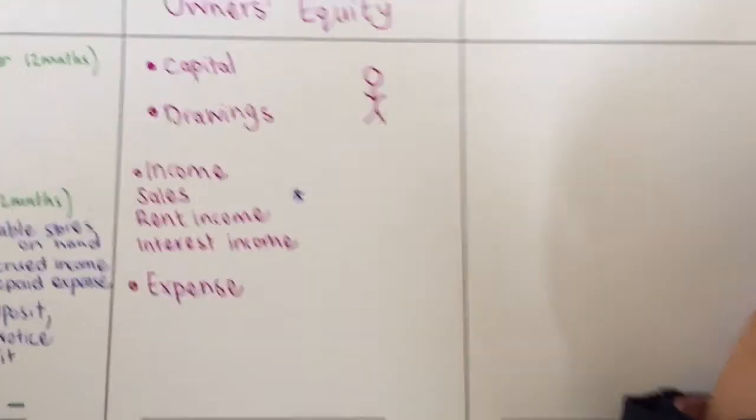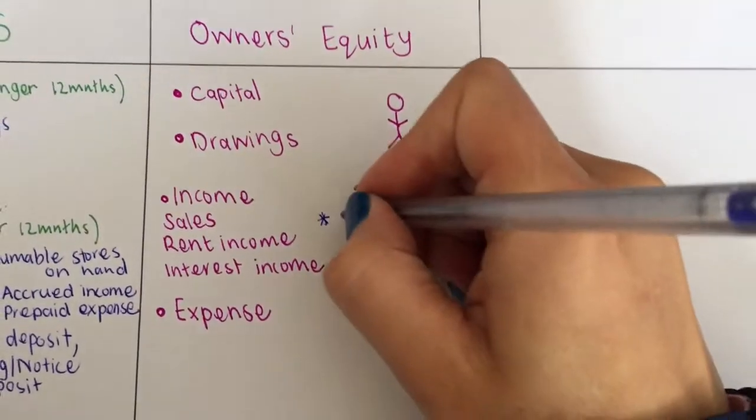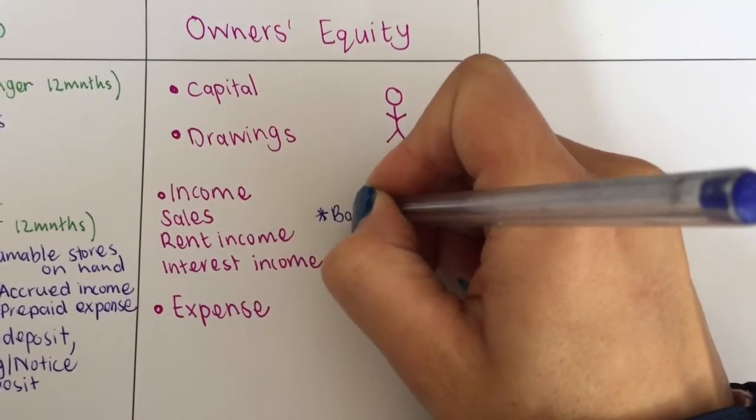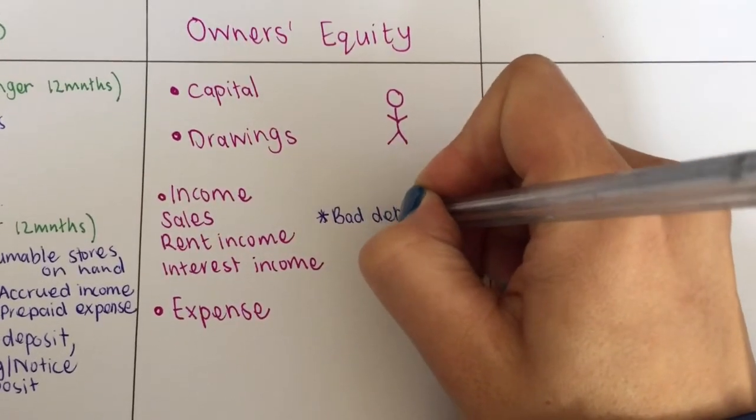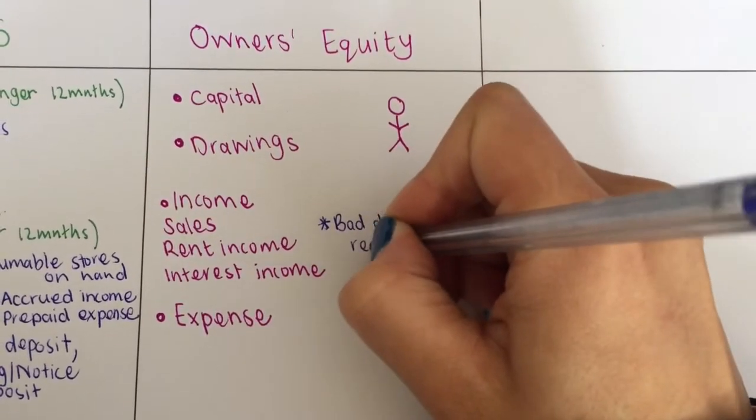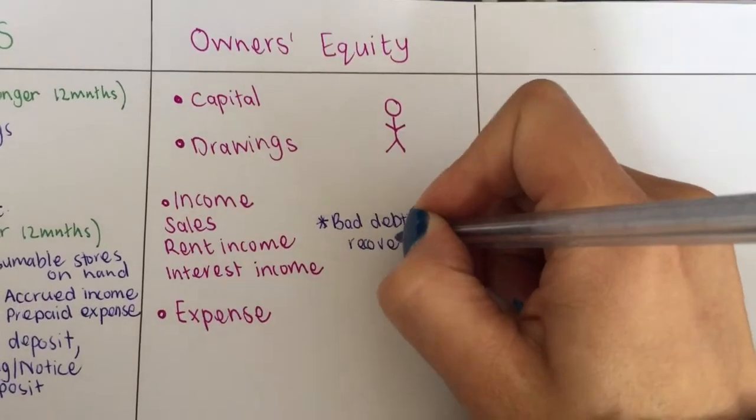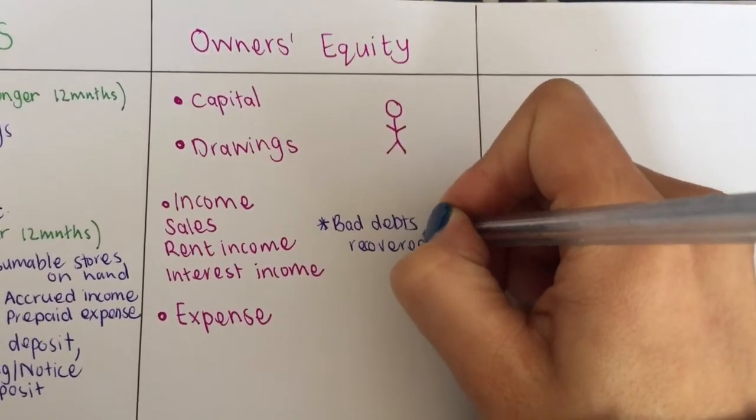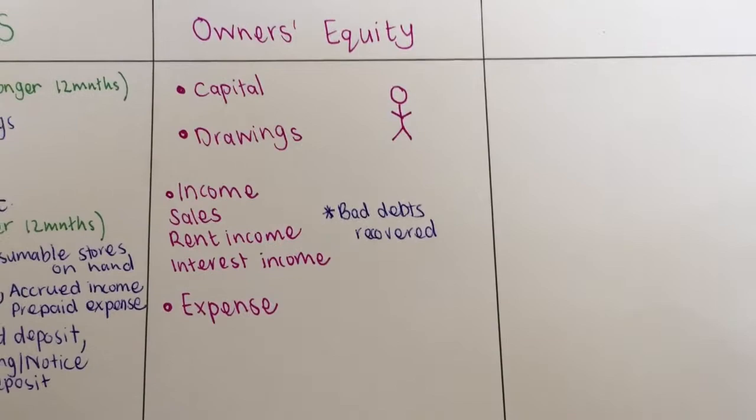You will classify it as interest on current account or interest on fixed deposit, et cetera. And then a new one that you're going to see in a little while it might appear is bad debts recovered. We've done that when we did the general journal.